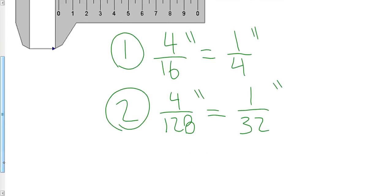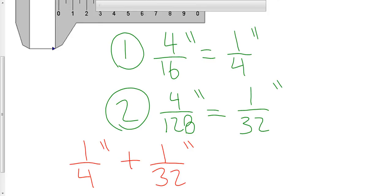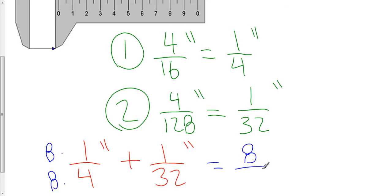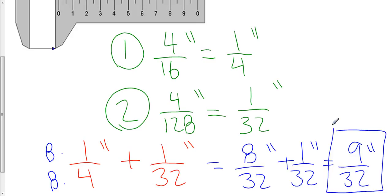So my final reading, I need to add those two measurements. I have a quarter inch, and I'm going to add 1/32nd of an inch. My common denominator here is going to be 32. If I multiply a quarter, top and bottom, by 8, I will get 8 over 32, so 8/32nds of an inch, plus 1/32nd of an inch. 8 plus 1 is 9, so I get 9/32nds of an inch. So my final reading here is 9/32nds of an inch, and that is how you read an imperial caliper.